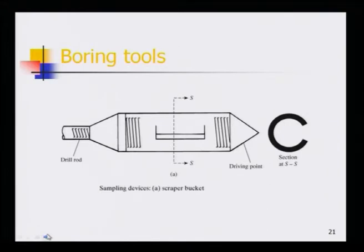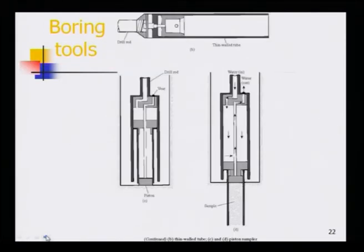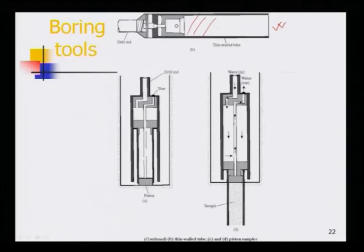Various sampling and boring tools include the scrapper bucket and driving point, which collects samples inside when pushed. The thin-wall tube sampler — commonly used in India — is attached to the drill rod and pushed to collect undisturbed soil samples. The piston sampler uses piston action to draw the soil sample inside.